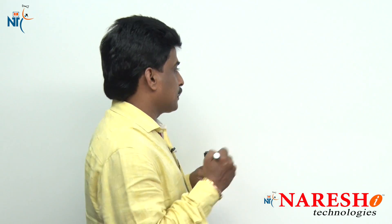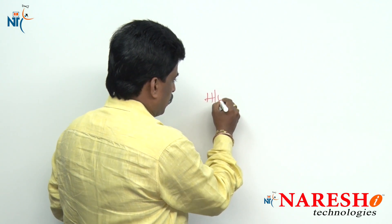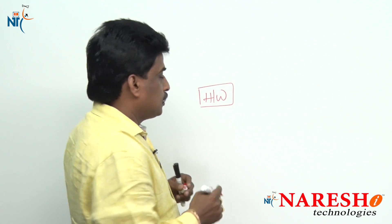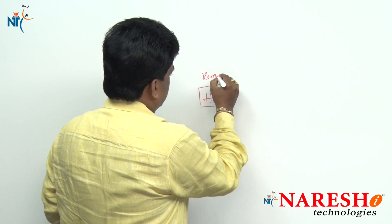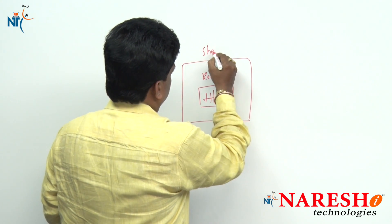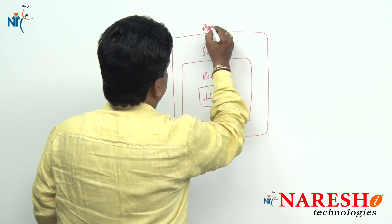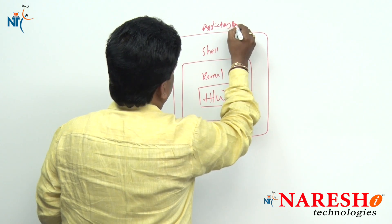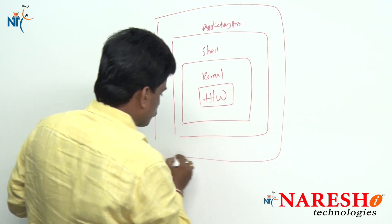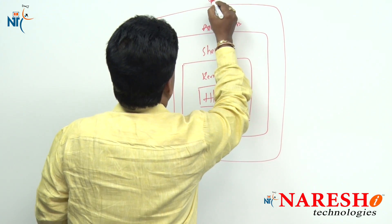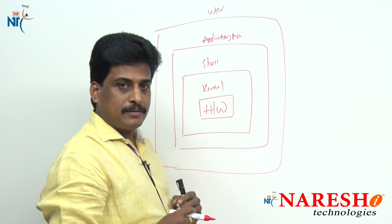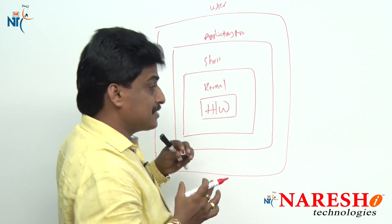Next we will try to discuss about Unix architecture — how it is actually constructed. Whenever we talk about Unix architecture, first is hardware, which is a low-level component. Above hardware is the kernel. Above the kernel is the shell. Above the shell are application programs, and on the very top is the user. This is the Unix operating system architecture in a simple way.